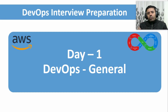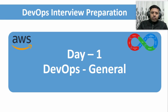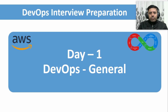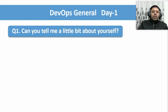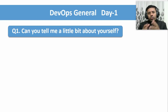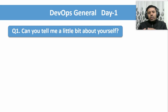Let's get started. Today is Day 1 for DevOps, and I will cover general questions — five questions in total. The first is the most common question, and it doesn't matter whether you are applying for a DevOps role, a cloud engineer role, or even a non-IT background position — when you go for the interview, the first question will definitely be something like 'Tell me about yourself' or 'Can you tell me a little bit about yourself?'